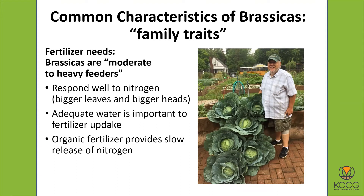You'll get bigger leaves and bigger heads if you're trying to grow cabbage or broccoli. It is important to remember that you need enough water for plants to take up fertilizer. Organic fertilizer is preferable because it provides a slow release of nitrogen rather than all at once. With a chemical fertilizer, nitrogen is available quickly and then it's gone — sometimes it's too much at once. It's like eating a cup full of sugar versus eating an apple: with the apple you get slow, steady energy spread out over time; with a cup of sugar you get a big jolt and then it's gone.